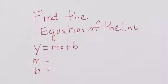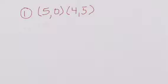Open up your MTT and date it for today's date. The title of this video is Finding the Equation of the Line. The formula that we're going to be using is y equals mx plus b, m equals, b equals. So the first thing we're going to do is write our formula: y equals mx plus b, m equals, b equals.